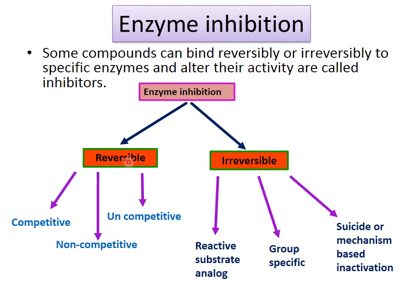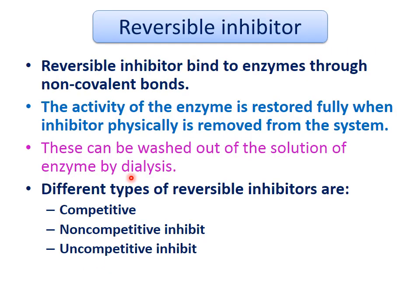Reversible inhibition is of three types: competitive inhibition, non-competitive inhibition, and uncompetitive inhibition. Irreversible inhibition is also of three types: reactive substrate analog inhibition, group-specific inhibition, and suicide inhibition. Today we will only see all three types of reversible inhibition.